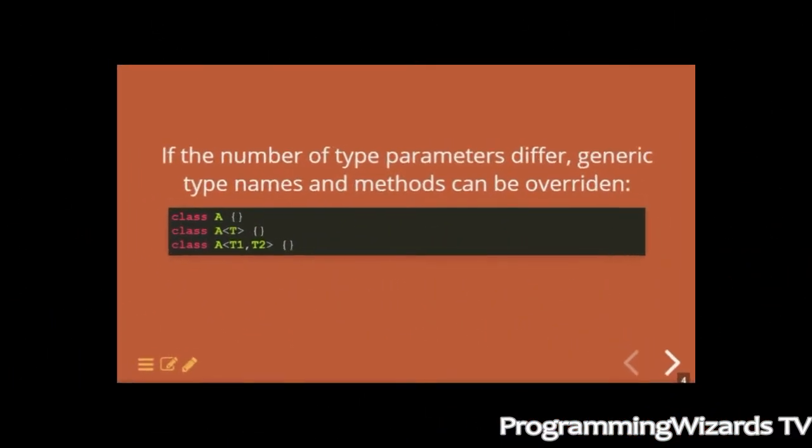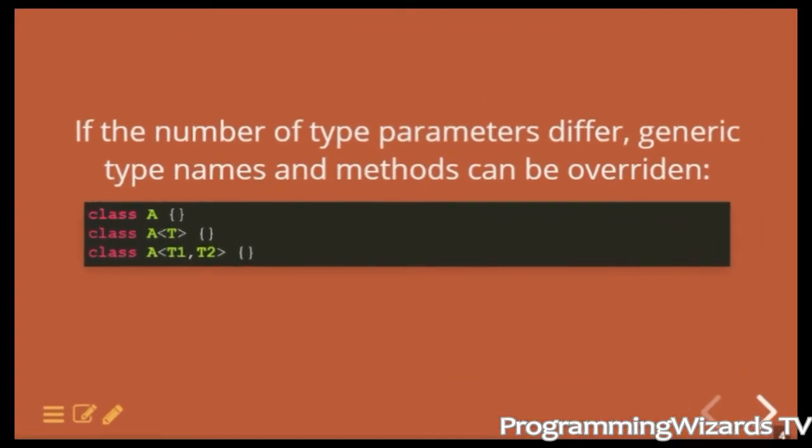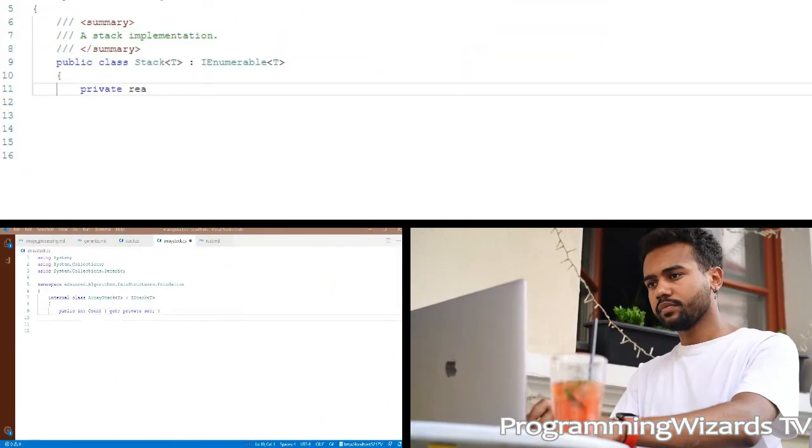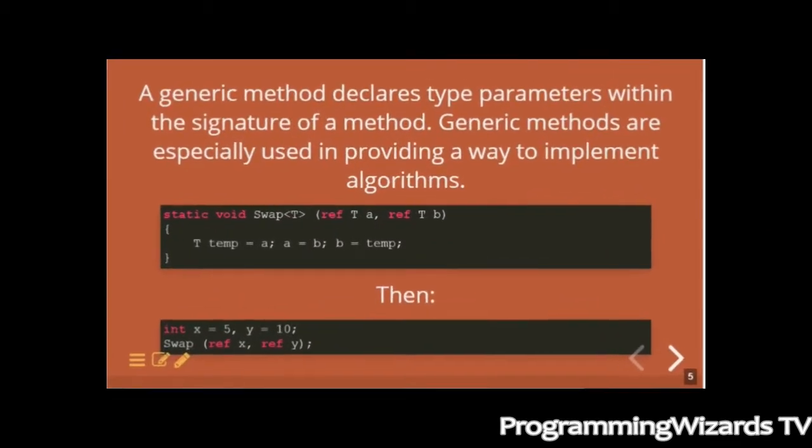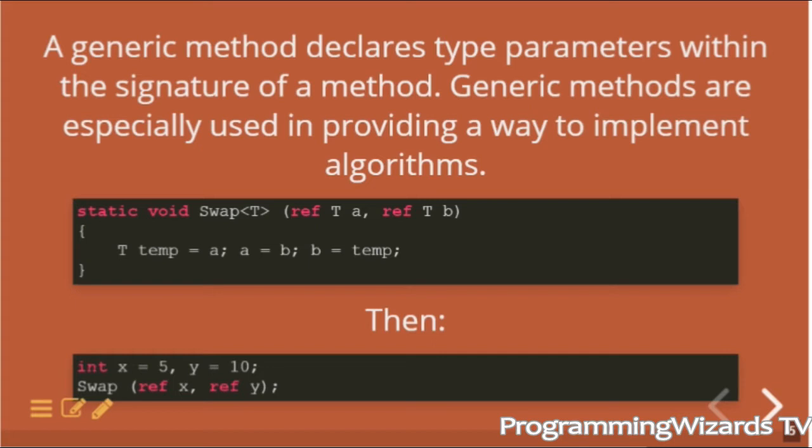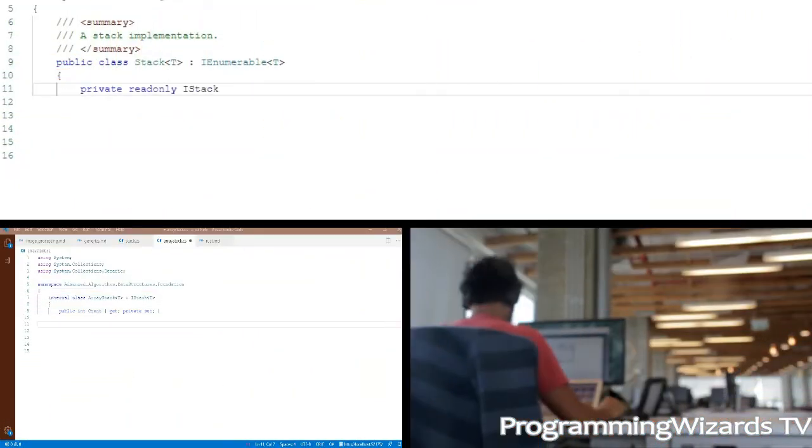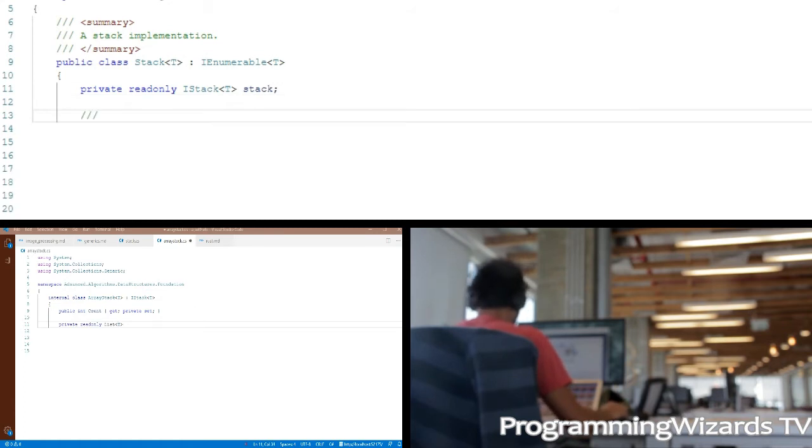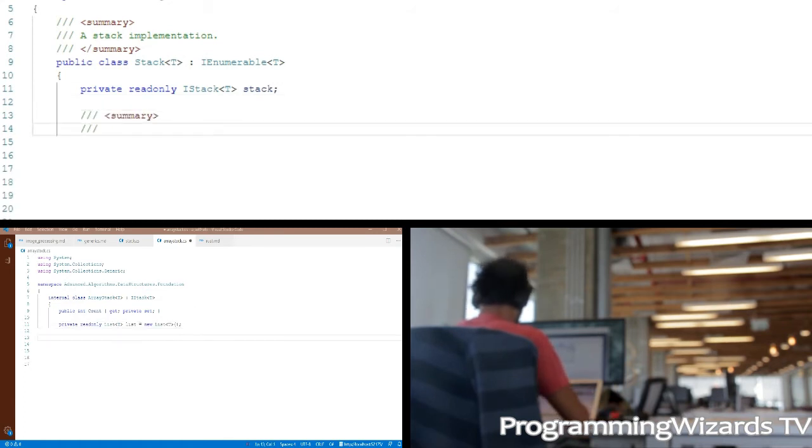If the number of type parameters differ, generic type names and methods can be overridden. The generic method declares type parameters within the signature of a method. Generic methods are especially used in providing a way to implement algorithms. When invoking a generic method, mostly you don't need to specify the type parameter as the compiler is able to infer it. For a method to be classified as generic, it has to specify the type parameters via angle brackets.